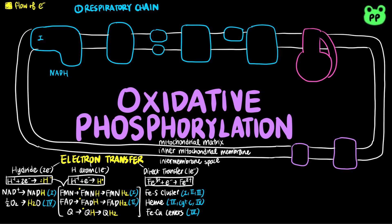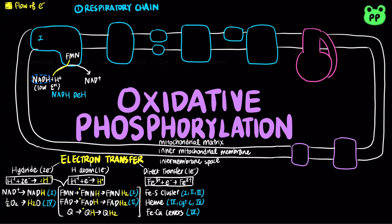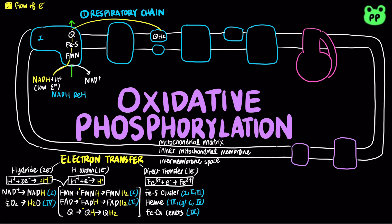Complex 1 is also known as NADH dehydrogenase. Electrons from NADH pass through a flavoprotein with the cofactor FMN, through a series of iron-sulfur centers, and finally to ubiquinone, which is reduced to ubiquinol, or QH2. The free energy released from the flow of electrons pumps four protons out of the mitochondrial matrix into the intermembrane space.